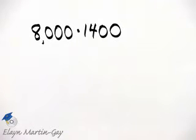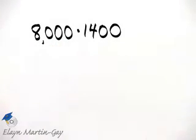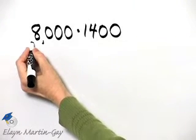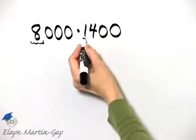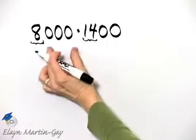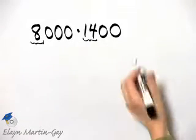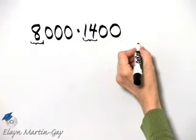You can multiply using our regular long method of multiplication, or since we are multiplying two whole numbers ending in zeros, we can use a shortcut process. That process begins by simply multiplying 8 — the digit 8 — by 14, and then we'll insert zeros to the end of that product. So let's go off to the side and multiply 14 and 8.